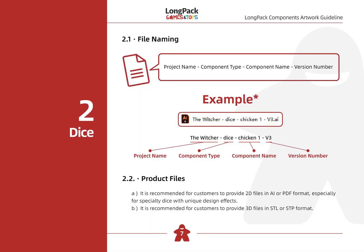Section 2: DICE. 2.1 File Naming. The recommended file naming convention is: Project Name - Component Type - Component Name - Version Number. For example: The Witcher-Dice-Chicken1-v3.ai